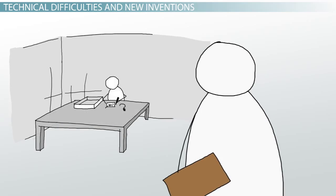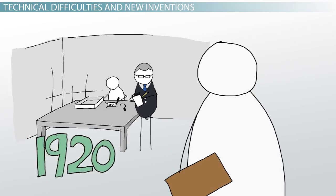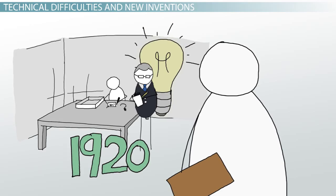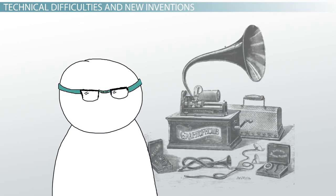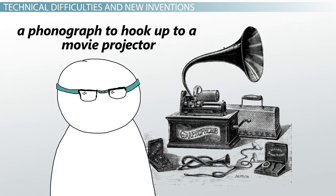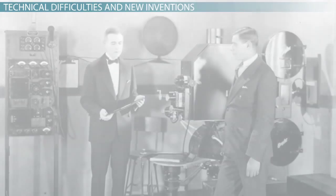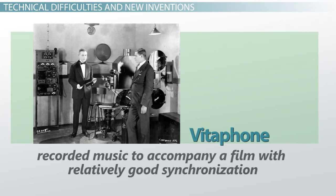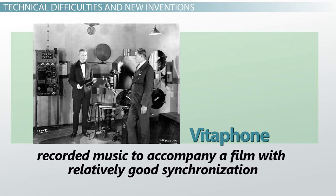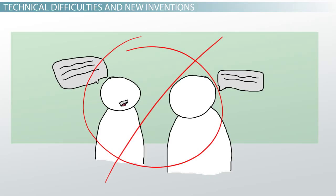Inventors kept trying to conquer these problems, but it wasn't until the mid-1920s that they made any real progress. By this time, technology had developed enough to permit a phonograph to hook up to a movie projector. This sound-on-disc system, called the Vitaphone, allowed recorded music to accompany a film with relatively good synchronization, but it still wasn't accurate enough for dialogue.